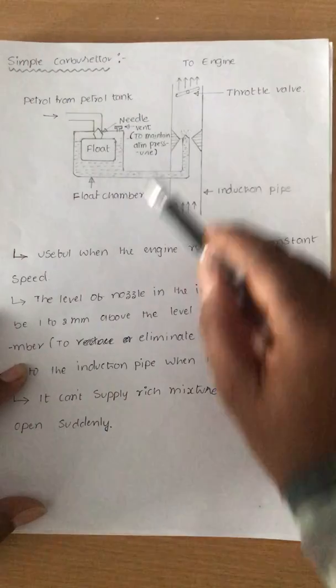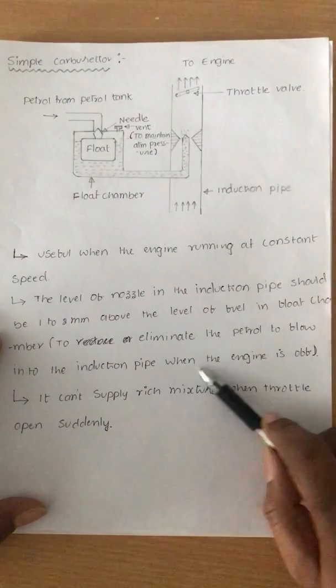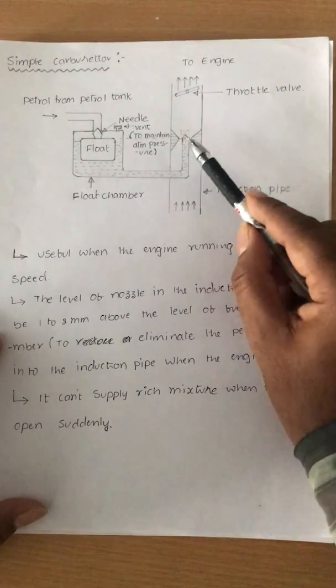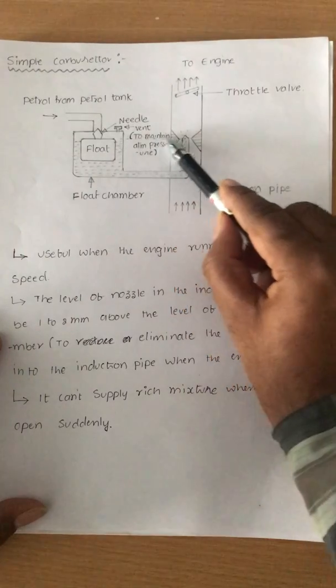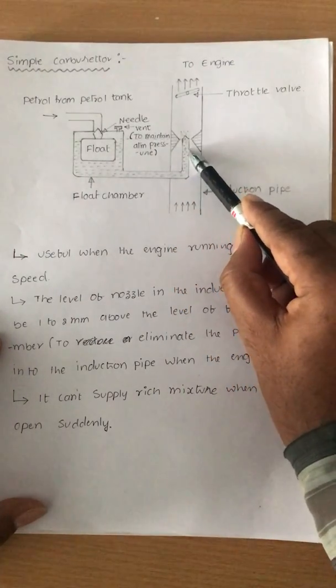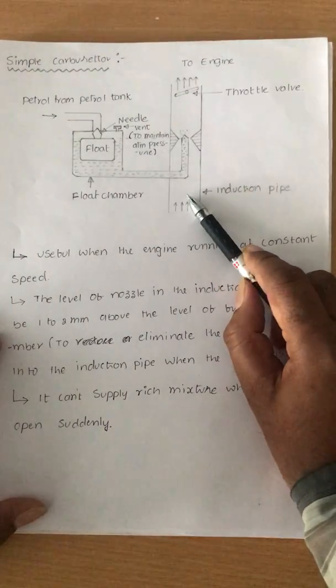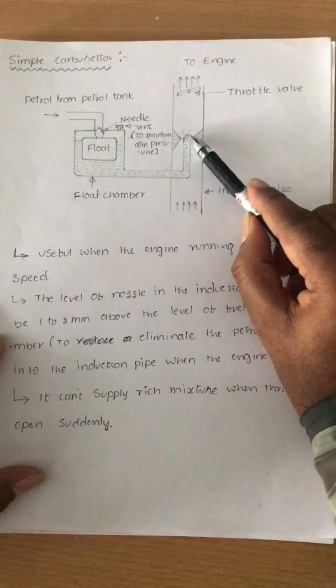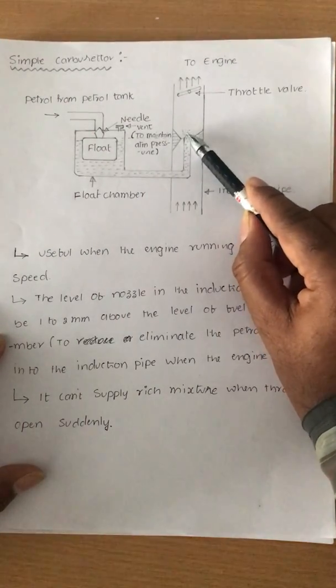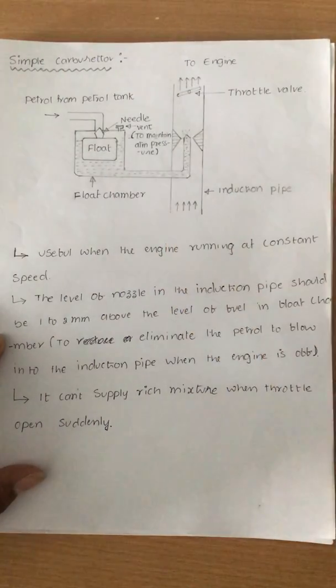This is to eliminate petrol flow into the induction pipe when the engine is off. If the nozzle is placed below the fuel level, the fuel continuously flows out even when the engine is switched off, causing wastage. To eliminate this, we fix the nozzle 1 or 2 mm above the fuel level in the float chamber.